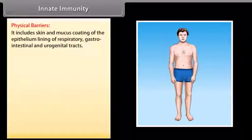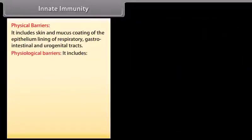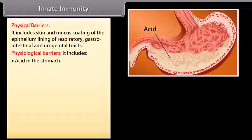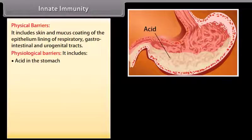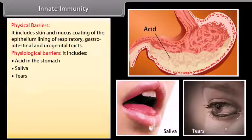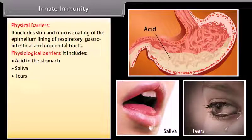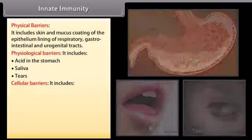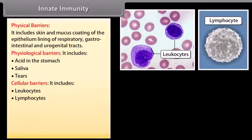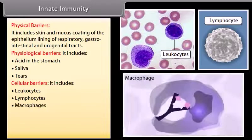Physical barriers include skin and mucus coating of the epithelium lining of the respiratory, gastrointestinal, and urogenital tracts. Physiological barriers include acid in the stomach, saliva, and tears. Cellular barriers include leukocytes, lymphocytes, and macrophages.